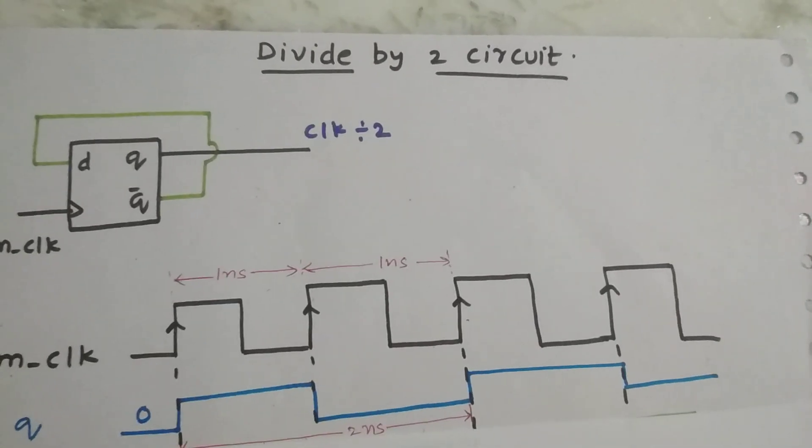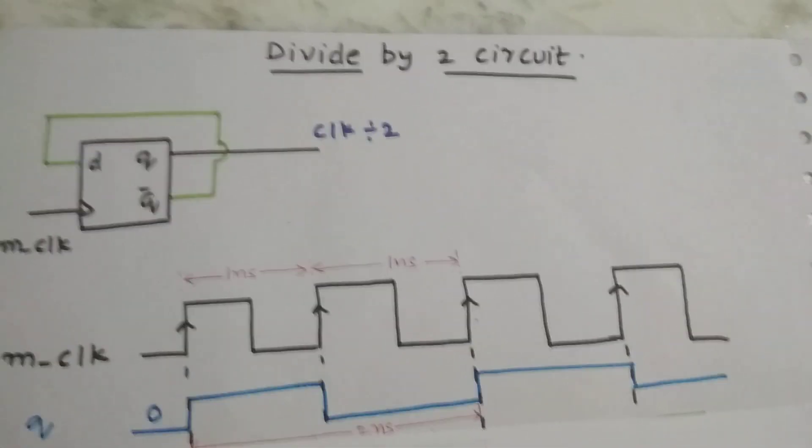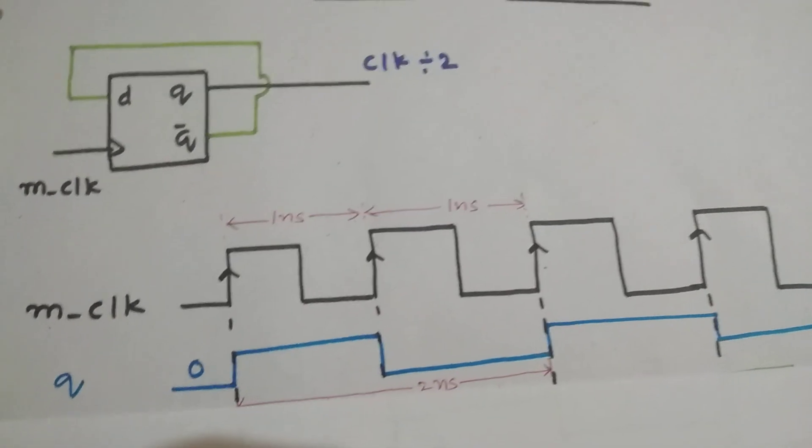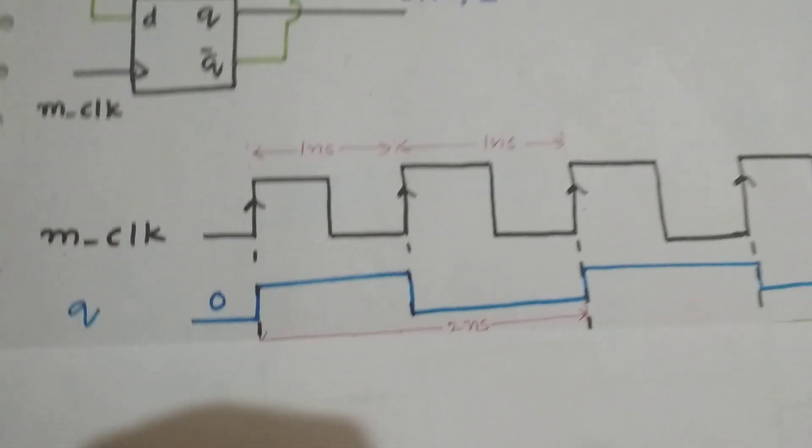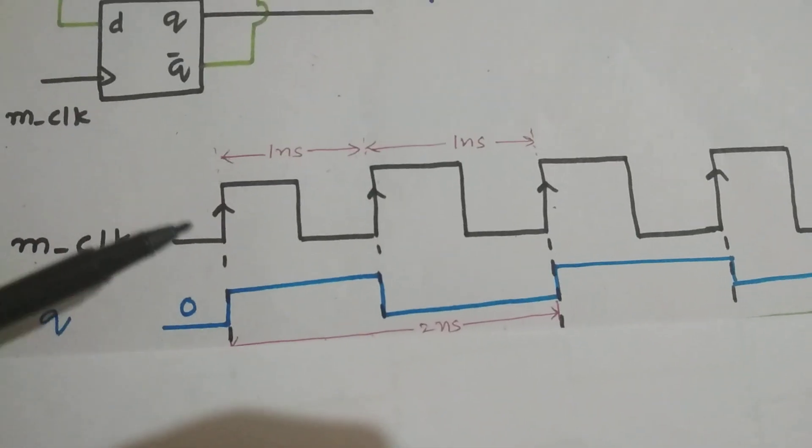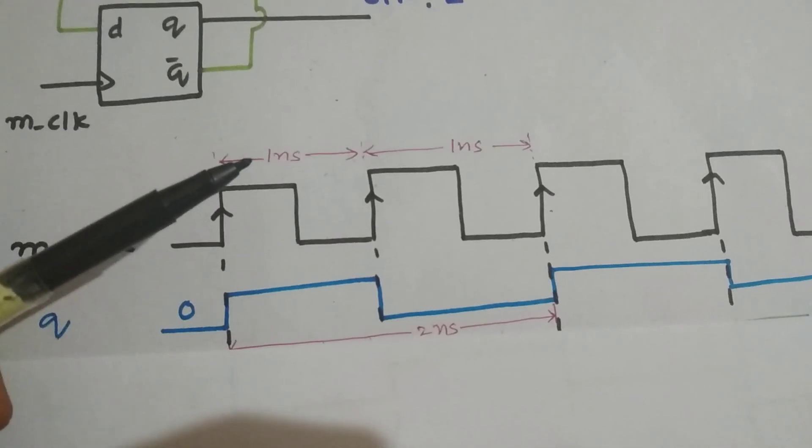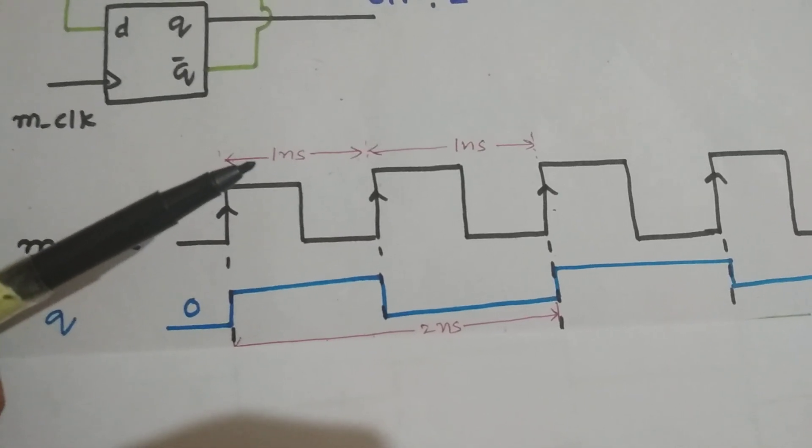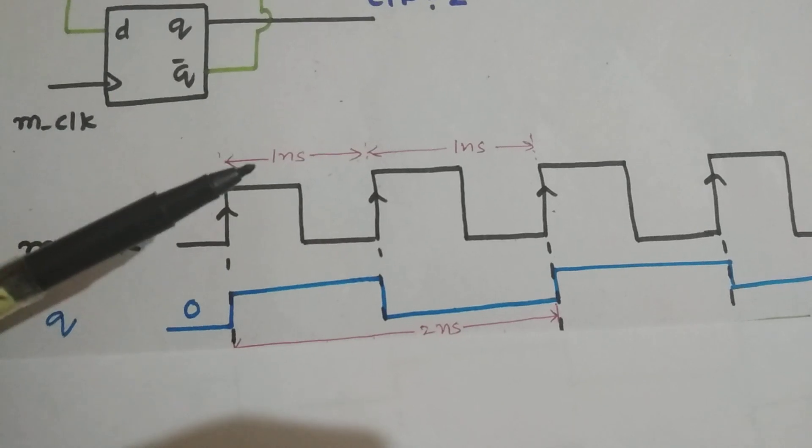The topic is about clock divided by 2 circuitry. We have a master clock with a time period of 1 nanosecond, and we need to divide its frequency by 2.